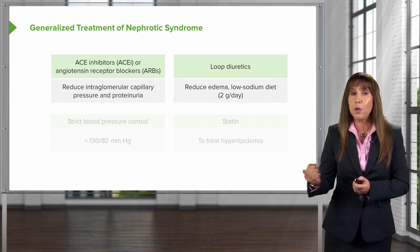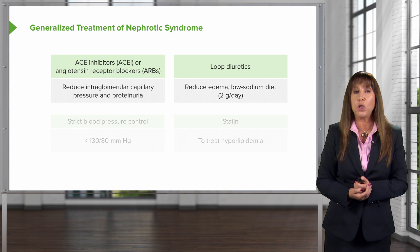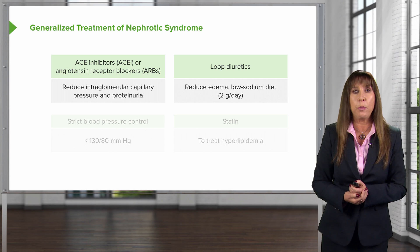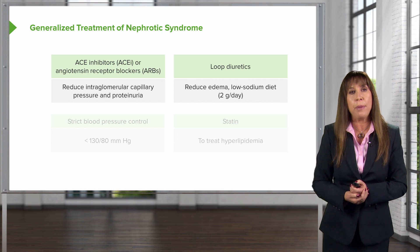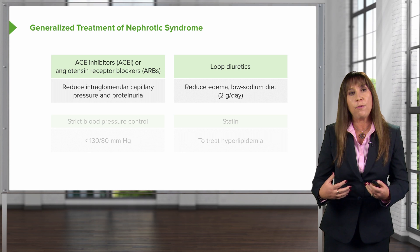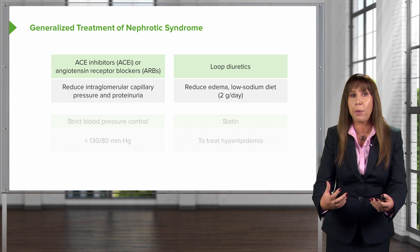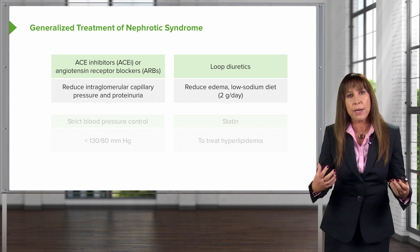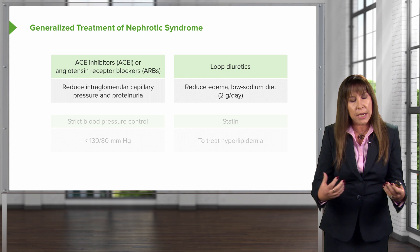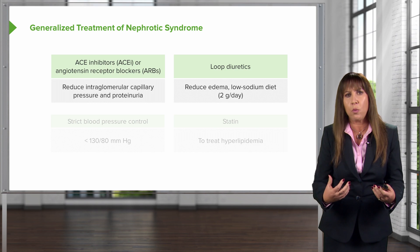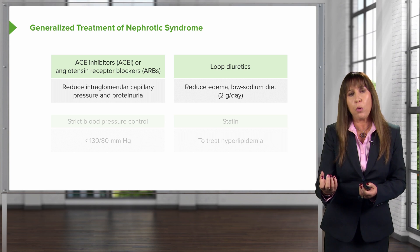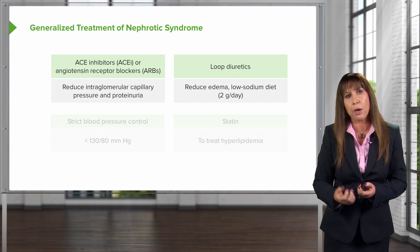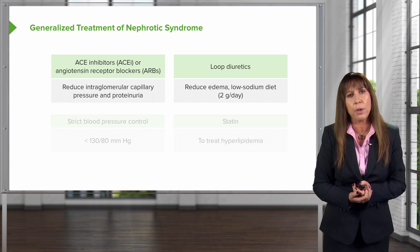We also want to give our patients loop diuretics — things like furosemide and bumetanide — because that's very helpful to mobilize volume off their body. Our patients are very edematous; they're retaining salt and water. So it's very important to mobilize that, and a loop diuretic is a perfect way to do that.